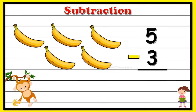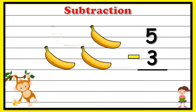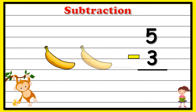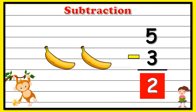Let's check out the remaining balance by counting the objects. From five bananas we have subtracted three bananas. Counting the remaining: one, two — so five minus three gives you the value two. We have two bananas remaining.